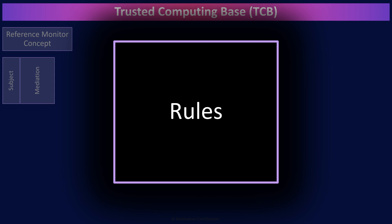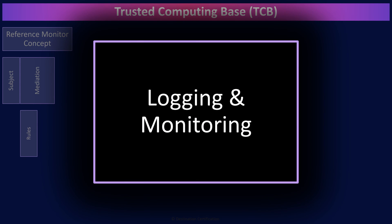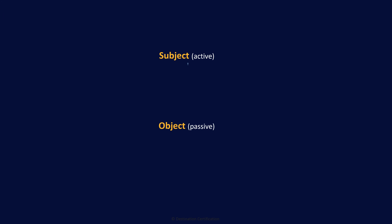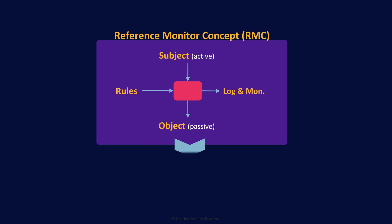That set of rules is the functional aspect of the control. Every control also has to have an assurance aspect — we need to know if the mediation is working correctly on an ongoing basis. Typically, we log and we monitor those logs. And the final piece of the RMC is what's being accessed — the object. An object is a passive entity, just being accessed by the subject. Objects can be things like databases, word files, buildings, or even other processes. A subject accesses an object through some form of mediation based on a set of rules, and all this is logged and monitored to provide assurance that it is working correctly.